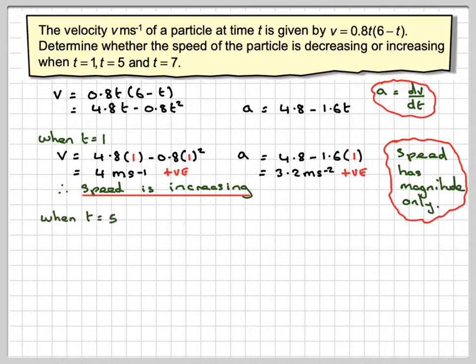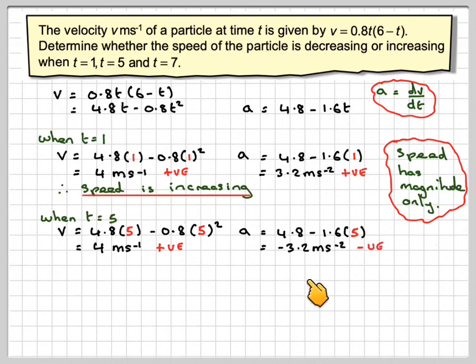And when t equals 5, v will be 4.8 times 5 minus 0.8 times 5 squared, which gives 4 meters per second, again, which is positive. The acceleration will be 4.8 minus 1.6 times 5, which is minus 3.2 meters per second, which is negative.